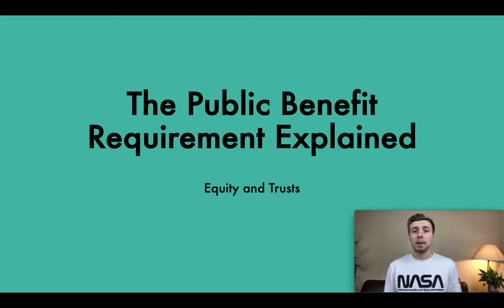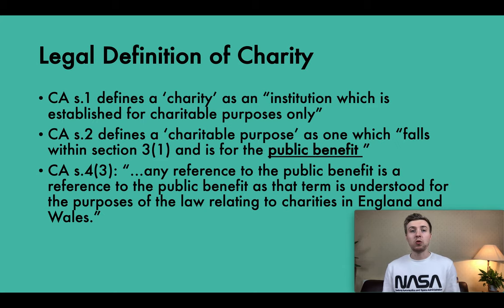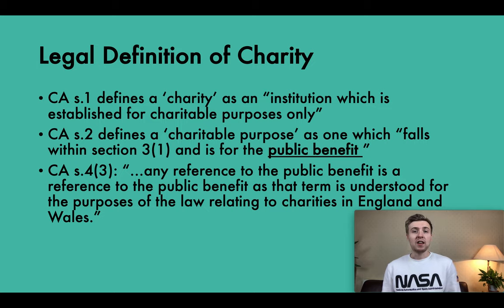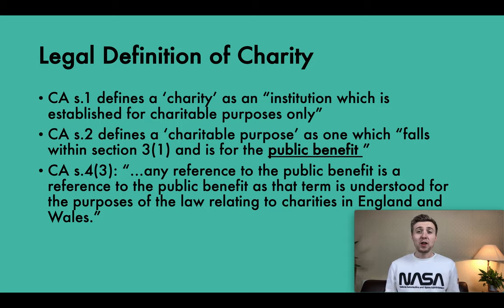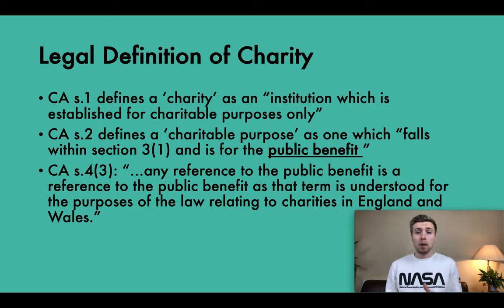In this video, we're going to continue talking about charitable trusts, and specifically we're going to begin talking about the public benefit requirement. We've already seen that a charity is defined as an institution established for charitable purposes only, and section two defines a charitable purpose as one which falls within section three one and is for the public benefit. So there is a requirement of public benefit, and both must be satisfied for there to exist a charitable purpose under section two of the Charities Act 2011.